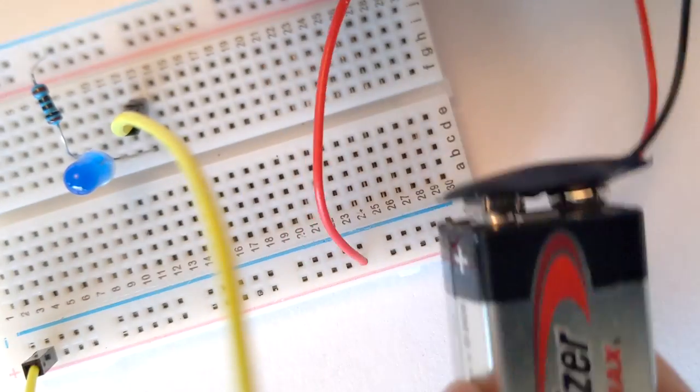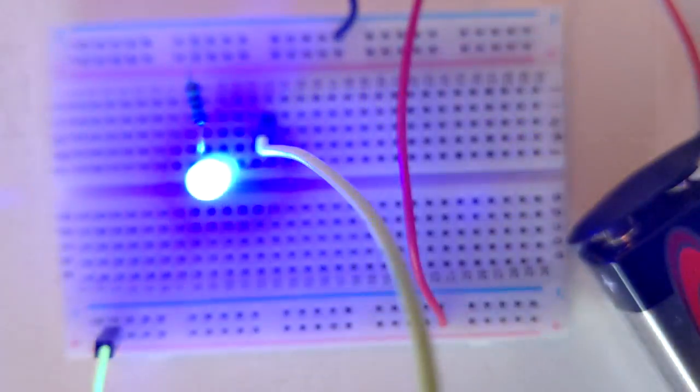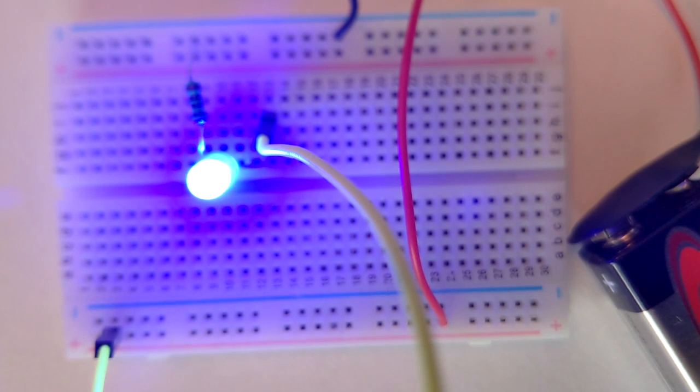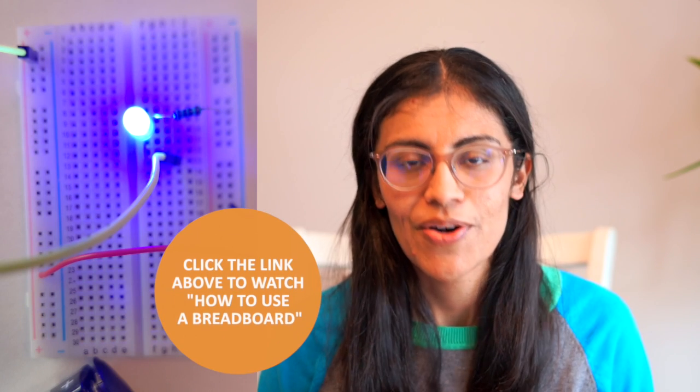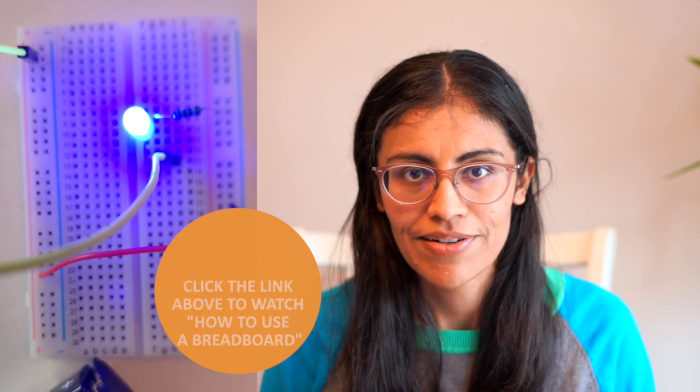So here's our 9 volt battery and we've connected to our breadboard and wired it so that our LED turns on. Make sure you go and check out that video if you are new to using a breadboard and these materials to build a circuit.